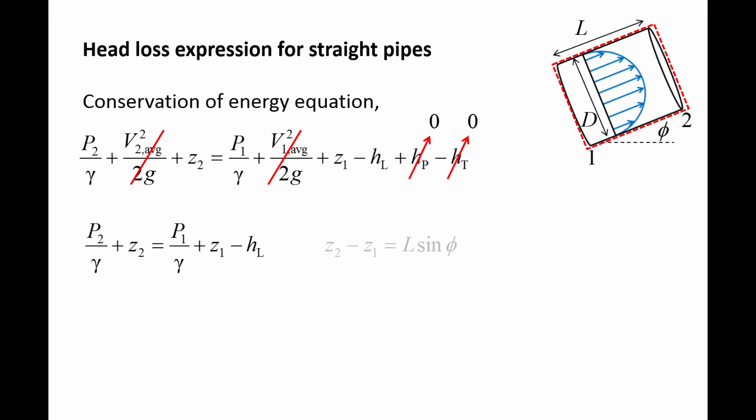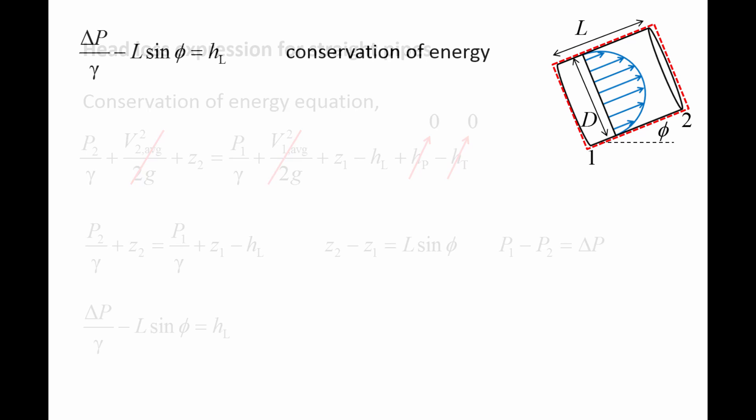The change in elevation is equal to L sin phi and we label the change in pressure as delta p. Substituting these expressions into the conservation of energy equation gives us delta p over gamma minus L sin phi equals the head loss.